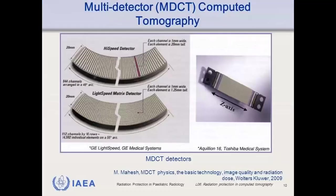Next is the multiple detector CT scan. In multiple detector CT scan, we use two-dimensional detectors. These two-dimensional detectors allow CT scanning to acquire multiple slices or sections, and increase the speed of CT image acquisition, improving the quality of your image.